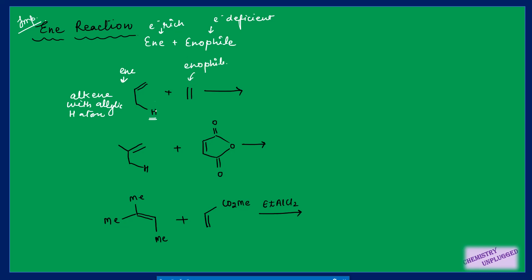The alkene with an allylic hydrogen atom is called the ene, and the alkene attached with an electron-withdrawing group is called the enophile. This reaction involves transfer of a proton from the allylic position to a carbon of the enophile. Then this pi bond shifts to form a new sigma bond, and this other pi bond shifts to form a new pi bond. This reaction requires very high temperature; if heat is not given, a Lewis acid must be used to increase the rate at room or moderate temperatures.